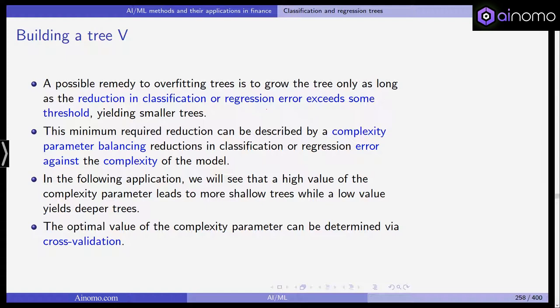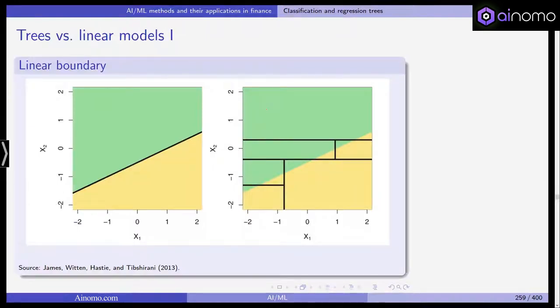And in the application we will see how this works. We will see that a high value of the complexity parameter leads to more shallow trees while low value yields deeper trees. And we will also see how in some instances if we take the basic models, this will actually if we don't look at overfitting, the models will not generalize well to new data. We will have huge overfitting. And again as you might have imagined, the optimal value of the complexity parameter, it's a hyper parameter, is determined via cross validation.